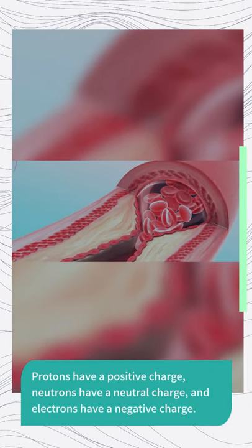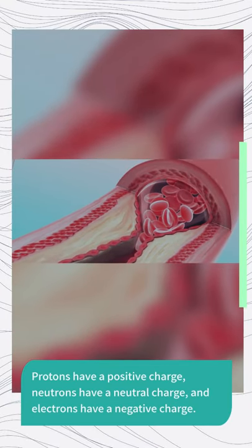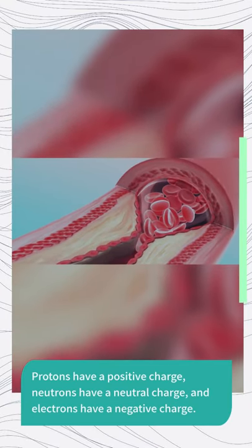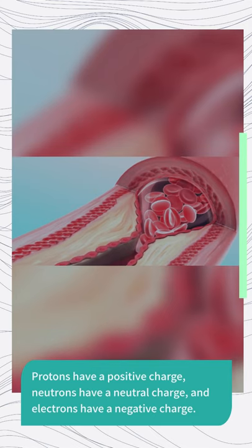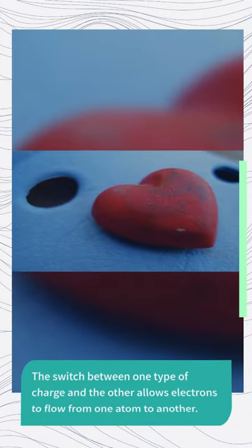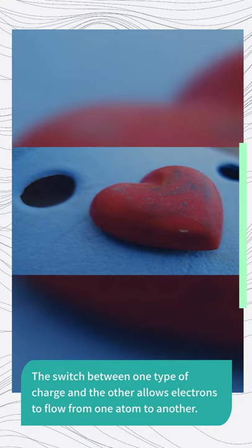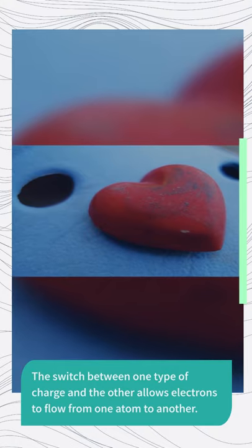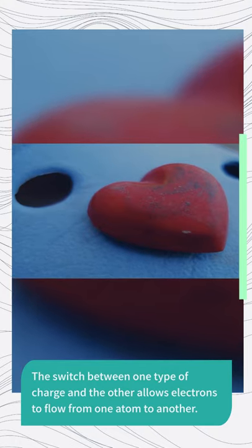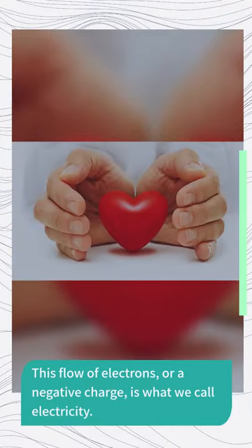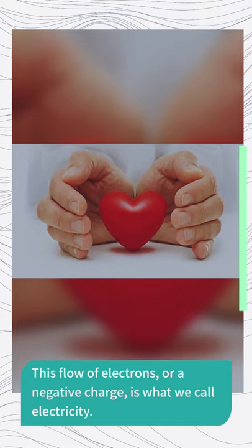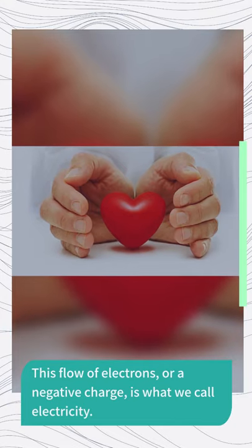Protons have a positive charge, neutrons have a neutral charge, and electrons have a negative charge. The switch between one type of charge and the other allows electrons to flow from one atom to another. This flow of electrons, or negative charge, is what we call electricity.